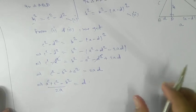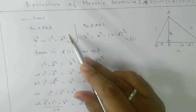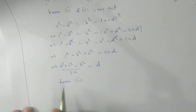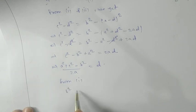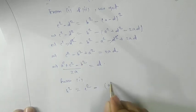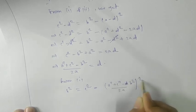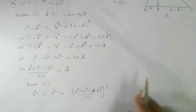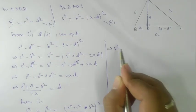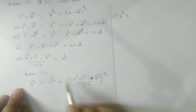Now we substitute the value of D into equation one. H² = C² − D², so H² = C² − [(A² + C² − B²) / 2A]². We apply the identity a² − b² = (a + b)(a − b).